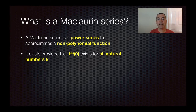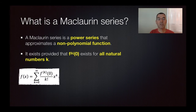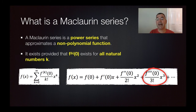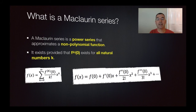It only exists if the derivative exists for all possible derivatives — the first derivative, the second derivative, the third derivative. It will exist as long as you never run into an error when taking the derivative of that function. The function itself will be the sum as k goes from zero to infinity of the k-th derivative at zero over k factorial times x to the k. Expanded out, it looks like: f(0) plus the first derivative at zero times x, plus the second derivative at zero over two factorial times x squared, plus the third derivative at zero over three factorial times x cubed, and so on.